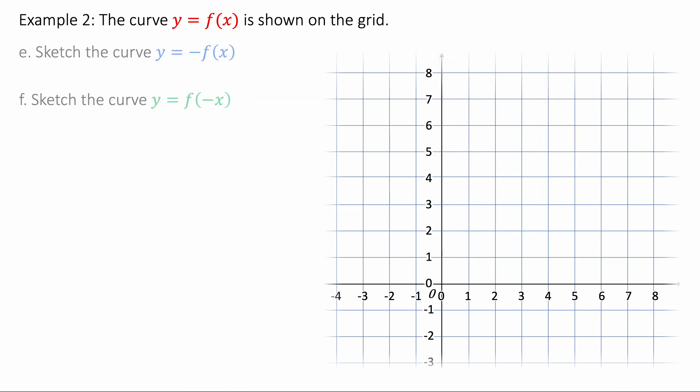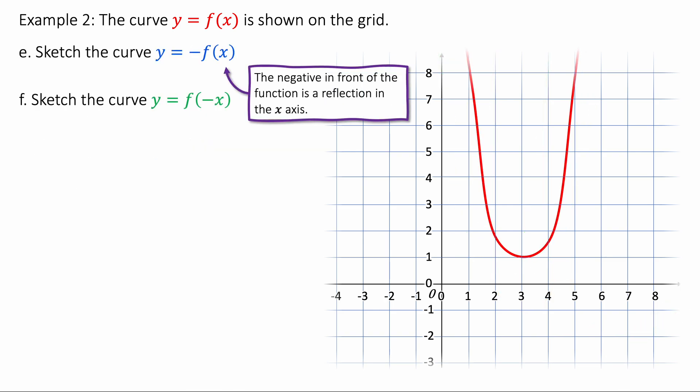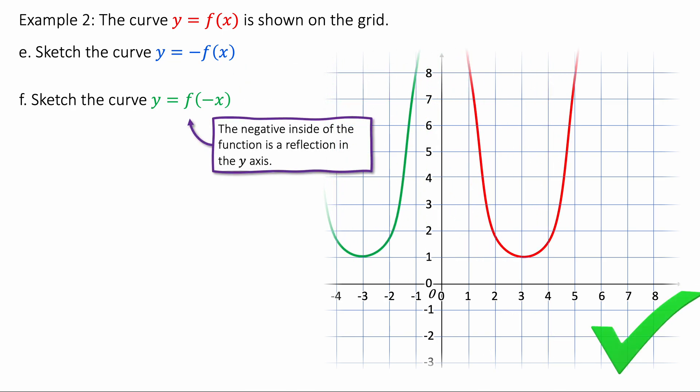Let's now look at these examples here where we've got negatives involved. We're going to sketch y equals minus f of x. And this is a reflection in the x axis. This is going to reflect vertically like this. And then y equals f of minus x is a reflection in the y axis. So it'll look like this green curve here.